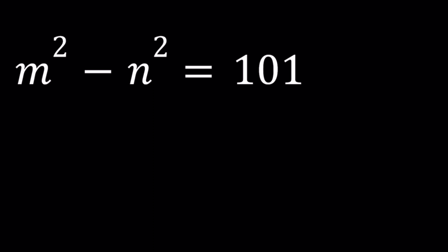For this equation, though, we have a simple method. m squared minus n squared is called a difference of two squares. It can be factored as m plus n times m minus n. In general, this is a formula for factoring difference of two squares. And then set it equal to 101.